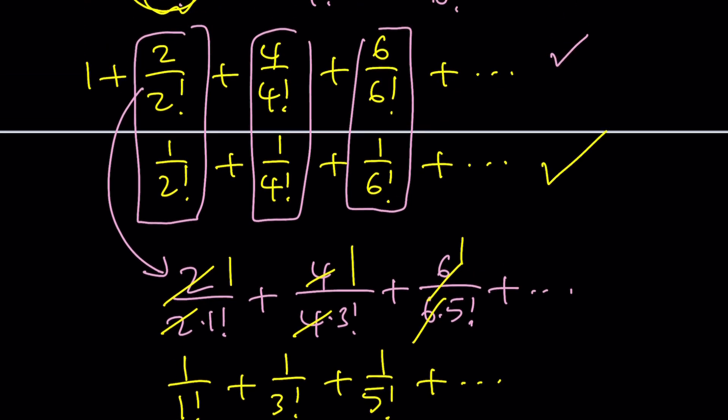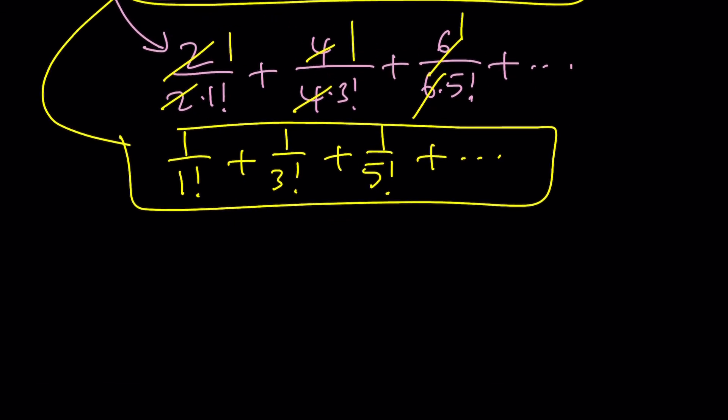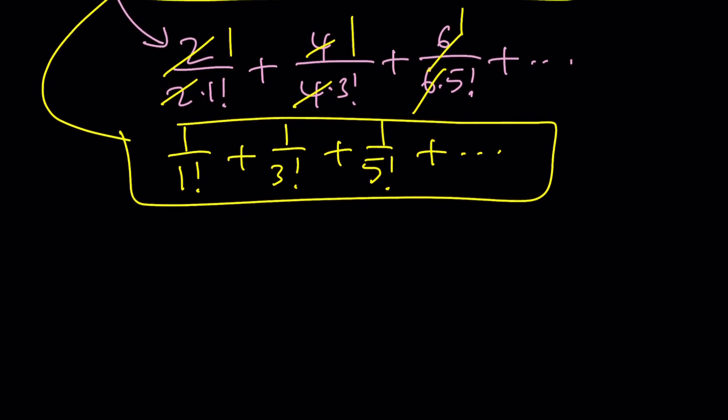But guess what? The bottom row is even so if you bring these two sums together this one and that one then you're going to get the following: 1 and then this is also 1 by the way. 1 plus 1 let's start with that plus 1 over 2 factorial plus 1 over 3 factorial plus 1 over 4 factorial plus 1 over 5 factorial and so on and so forth.